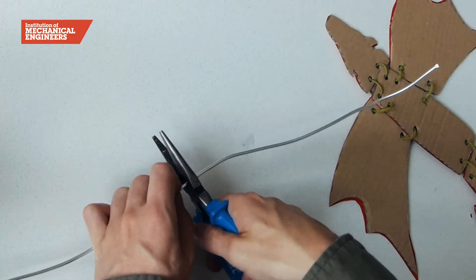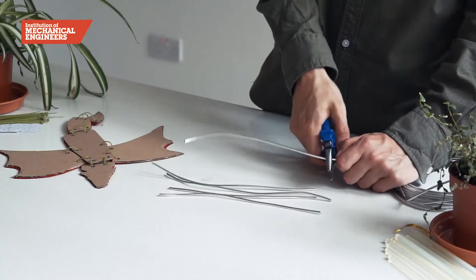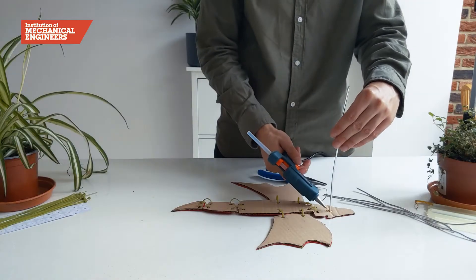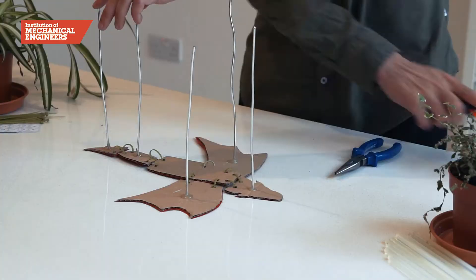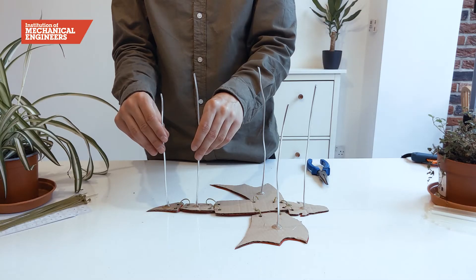Cut rods roughly seven centimeters long and use the glue gun to attach them to each part of the dragon, except for the main body. The main body will attach to the connecting rod.